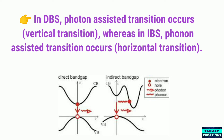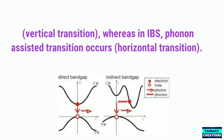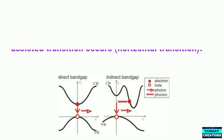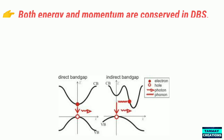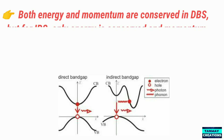On the other hand, in indirect band gap semiconductors, phonon-assisted transitions occur, which are horizontal in nature. The momentum of a phonon is comparatively larger than that of a photon, while the energy of a phonon is comparatively smaller than that of a photon. Both energy and momentum are conserved in direct band gap semiconductors.